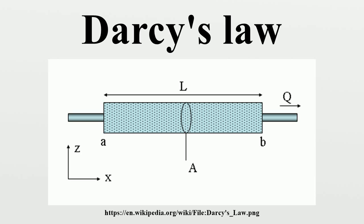Darcy's law is valid for laminar flow through the soil. In fine-grained soil, the dimensions of interstices are small and thus flow is laminar. Coarse-grained soils also behave similarly, but in very coarse-grained soil the flow is of turbulent nature, and hence Darcy's law is not valid in such soils. For flow through commercial pipes, flow is laminar when the Reynolds number is less than 2000, but in some soils it has been found that flow is laminar when the value of Reynolds number is less than unity.